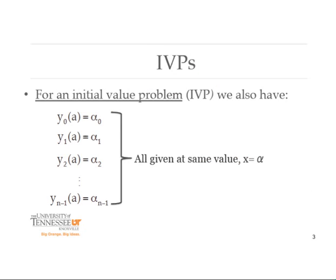When we do that, you extend the initial value problem itself: you have to evaluate all of those different functions y-zero, y-one, y-two, up through y-sub-(n minus one) at a, and get back some particular value. It's a vector representation, but all of those values have to be specified at the same value x equals a. The right-hand sides — those alpha-zeros, ones, twos, and so forth — don't have to be the same, but they all must be specified at that same value of x.